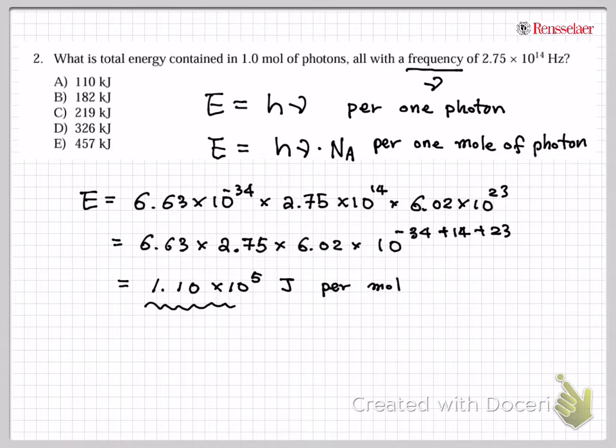Now I have this answer, but if you look at the multiple choices, the answer is given in kilojoules. Kilojoule is 10^3 joules. I think all of you know this, so I'm going to rearrange my equation. Therefore it's 110 kilojoules. Therefore this is my answer for the second problem.